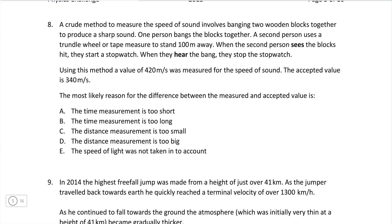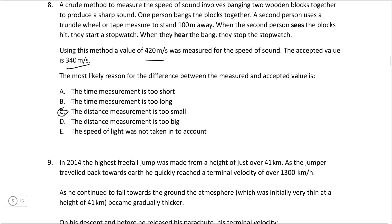Question 8. We have a crude method to measure the speed of sounds. Involves banging two wooden blocks together to produce a sharp sound. So one person does this and the second uses a trundle wheel or tape measure to stand 100 meters away. When the second person sees the blocks hit, they start a stopwatch. But when they hear the bang, they stop the stopwatch. So we have this method with a value of 420 meters per second was measured. The accepted value is 340 meters per second. The most likely reason for the difference is, I'm going to go with that the distance measurement is too small. If the distance measurement is too small, the speed of sound is quite large. And because of that, it will be hard to make an accurate measurement. So I'm going to go for C.